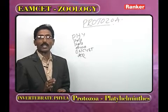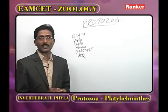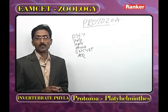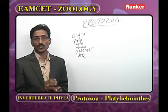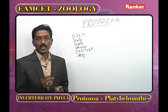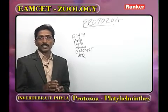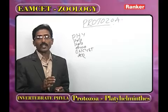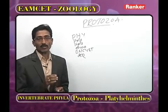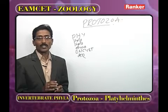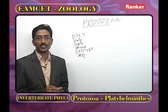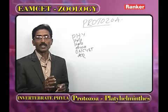Binary fission may be irregular, transverse, or longitudinal. Whenever conditions are favorable, Protozoans also reproduce sexually, requiring two organisms, two pronuclei, or two haploid gametes. Sexual reproduction methods include conjugation, autogamy, and endomixis. The most important method is conjugation.